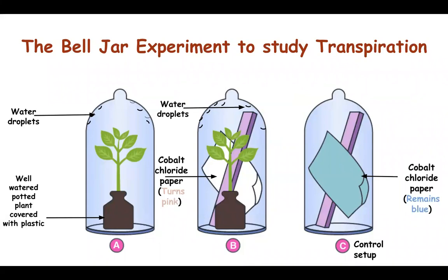We leave the three Beljars out in the open for an hour or so. After an hour, we notice that there are droplets formed in Beljar A and B on the inner surface. No such clear liquid droplets are formed in Beljar C. Beljar B, along with formation of clear liquid droplets, shows its cobalt chloride paper changing color from blue to pink, indicating that the clear liquid formed is water vapor. This tells us that the plant is transpiring and this water is the transpired water accumulated on the inner surface.